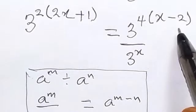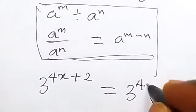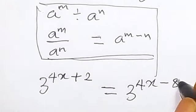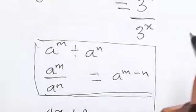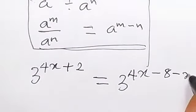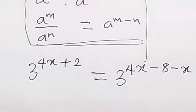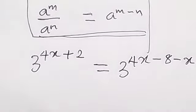When 4 opens, that's 4x minus 8, that's 3 raised to power 4x minus 8, then subtracting the index here, that's minus x. So that's what we have.